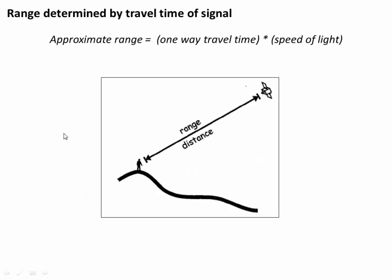The range between your receiver and the satellite is determined by the travel time of the signal. The radio wave moves at the speed of light, so the distance traveled — the range — is given by the travel time multiplied by its speed.